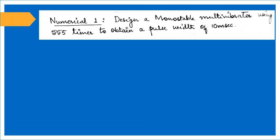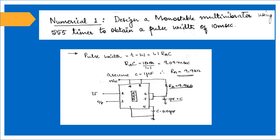The first numerical: design a monostable multivibrator using 555 timer to obtain a pulse width of 10 milliseconds.